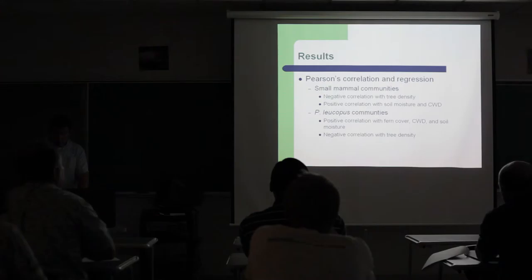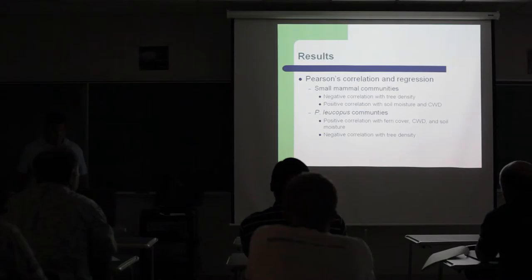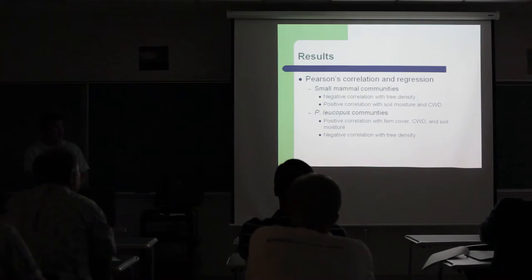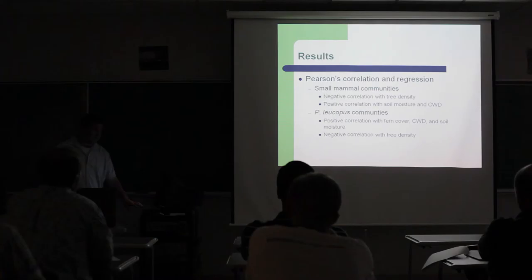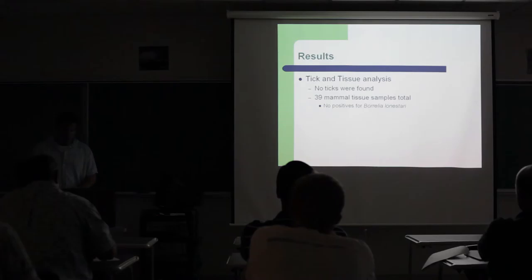We also did Pearson's correlation and regression. Small mammal communities showed negative correlations when comparing captures to tree density. Small mammals showed a positive correlation to soil moisture and coarse woody debris. Peromyscus leucopus showed positive correlation when comparing captures to percentage of fern cover, coarse woody debris, and soil moisture. Peromyscus leucopus also showed negative correlation when comparing captures to tree density. So as you can see, they're kind of similar between just the total small mammal and just Peromyscus.